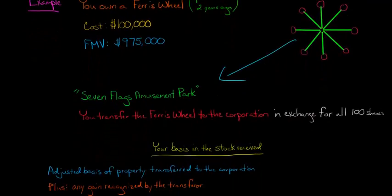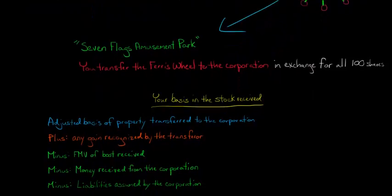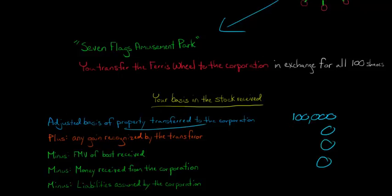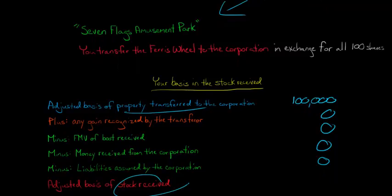Let's look at the basis in the stock received. The basis is going to be the adjusted basis of the property being transferred, which is $100,000 — that was the adjusted basis of the Ferris wheel. There's no gain recognized in the transfer, no boot received, no money received from the corporation, and no liabilities. So your basis in the stock received is going to be $100,000.